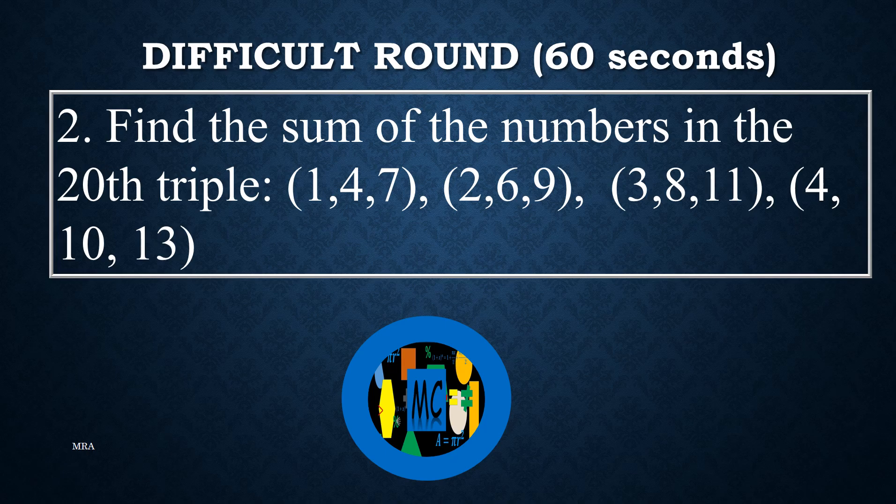Problem 2 (repeated): Find the sum of the numbers in the 20th triple. The sequence is: 1, 4, 7, 2, 6, 9, 3, 8, 11, 4, 10, 13.